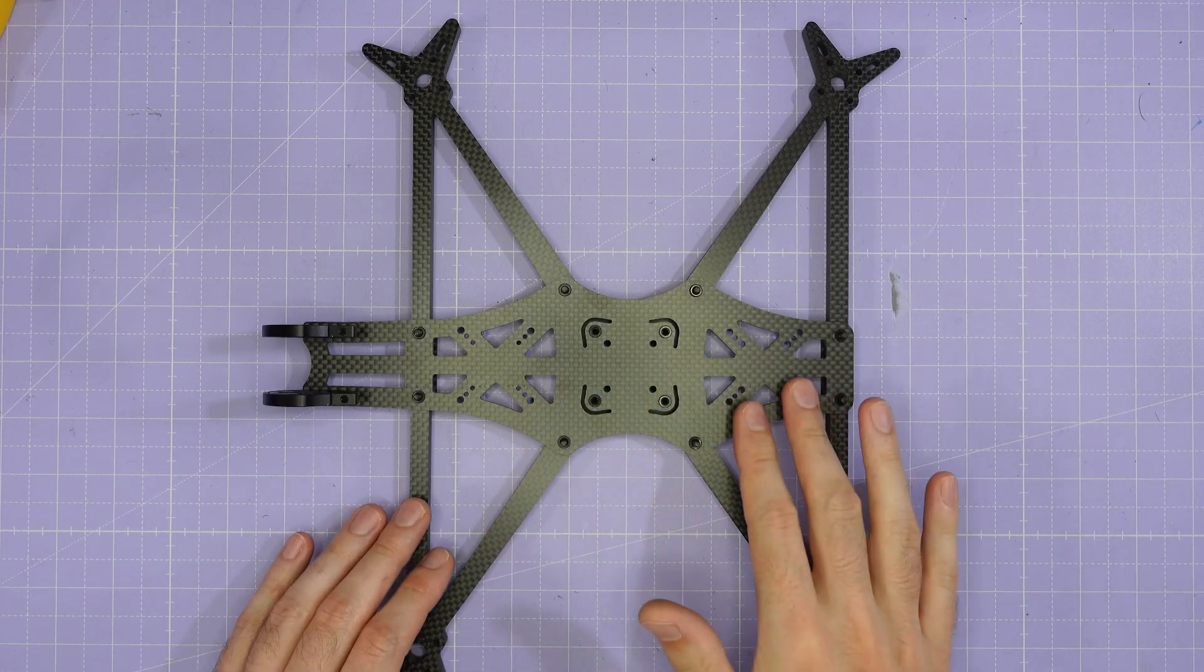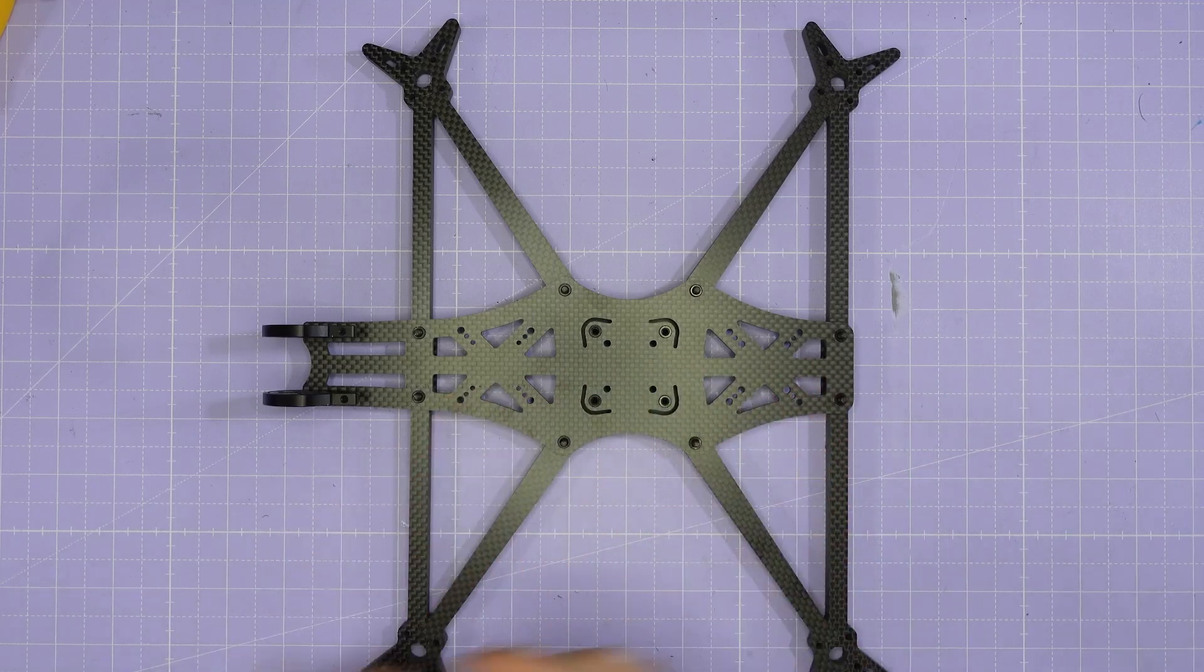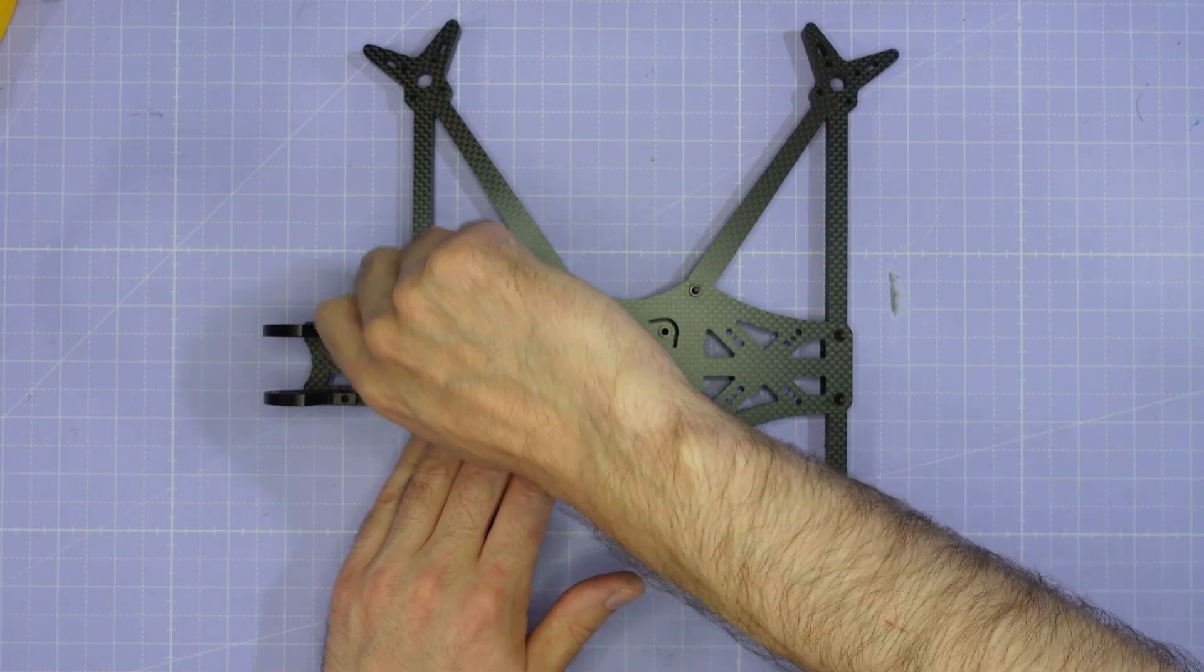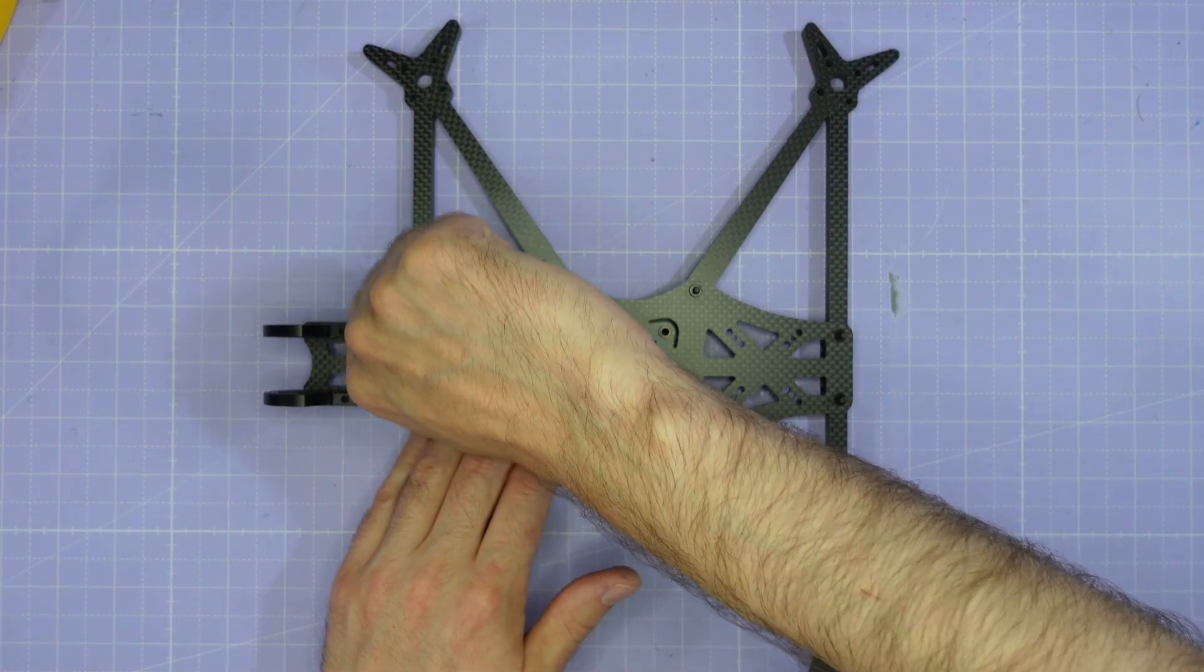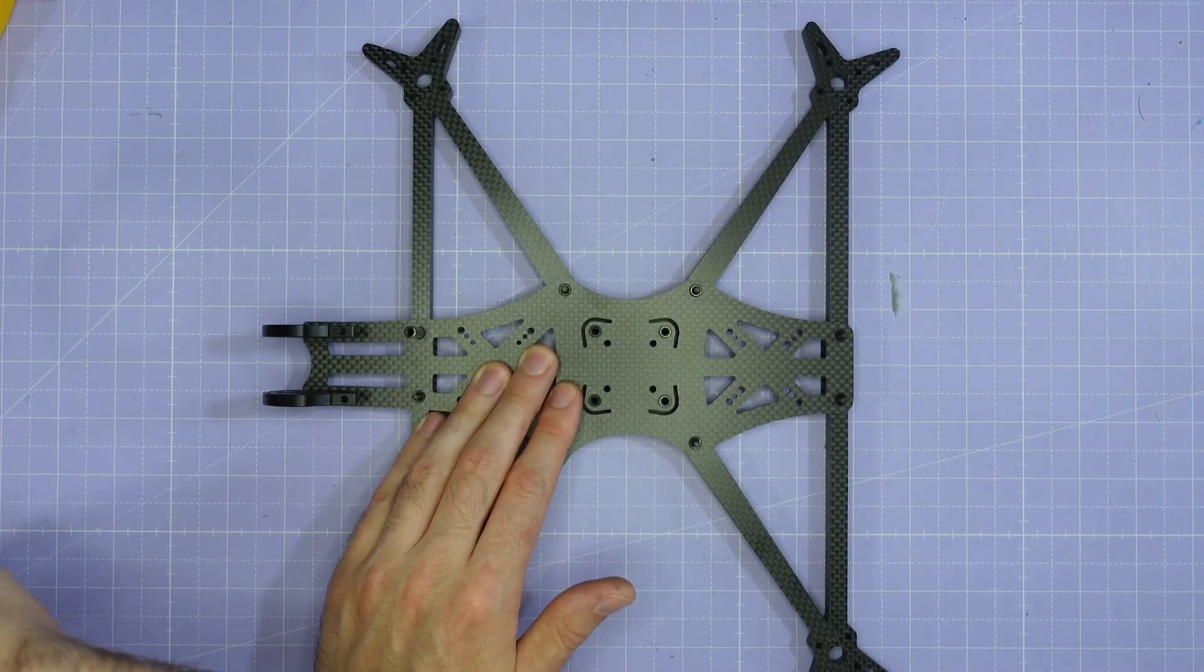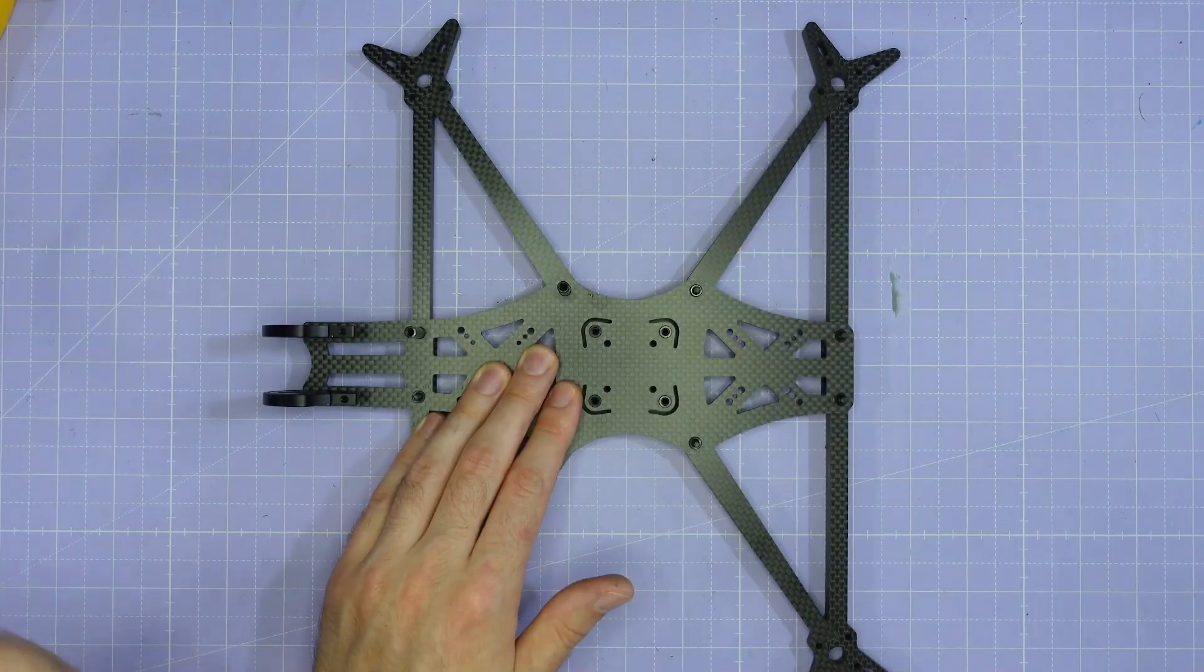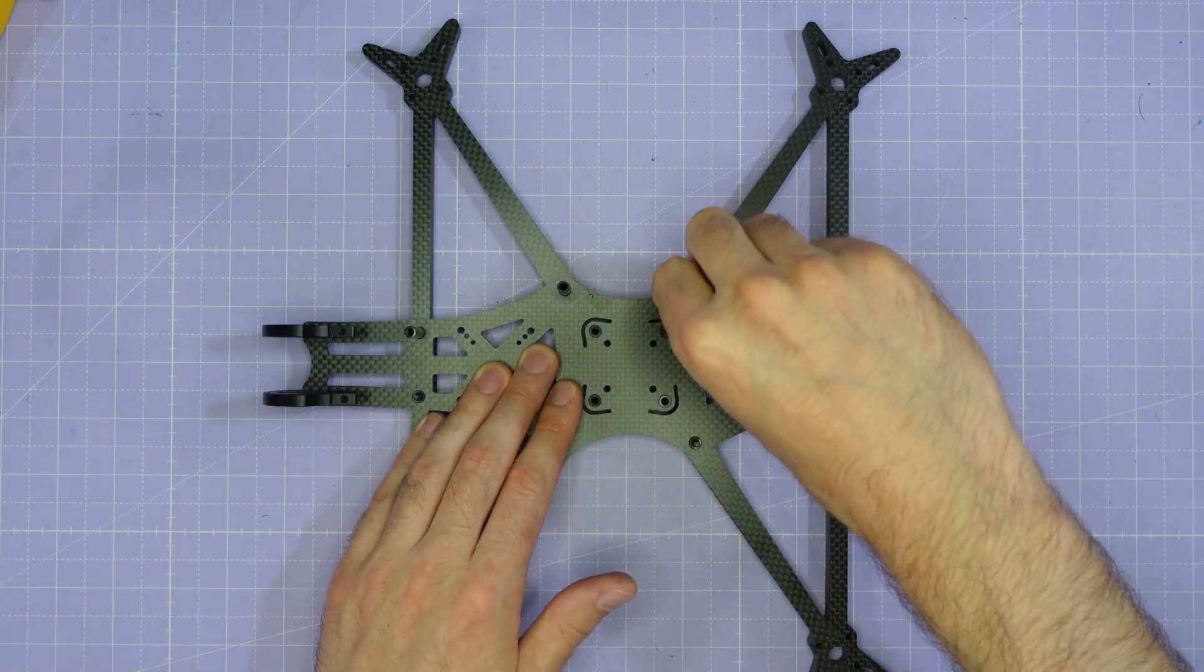Once all the electronics is assembled it's time to close the frame up and for that we're just going to use the M3 by 20 millimeter standoffs and screw them down onto the arm screws that are protruding out of the press nuts and you can just do those up finger tight I find you don't need to do them up tightly because the press nut stops the screw from backing out.